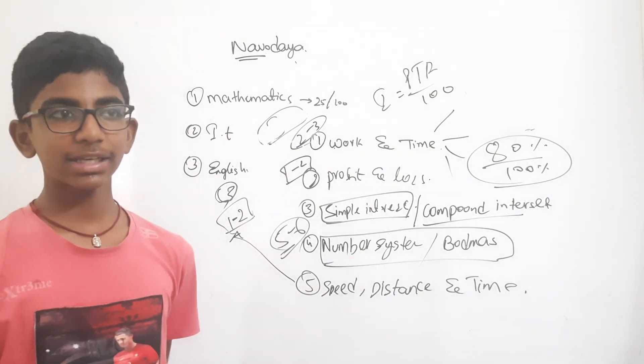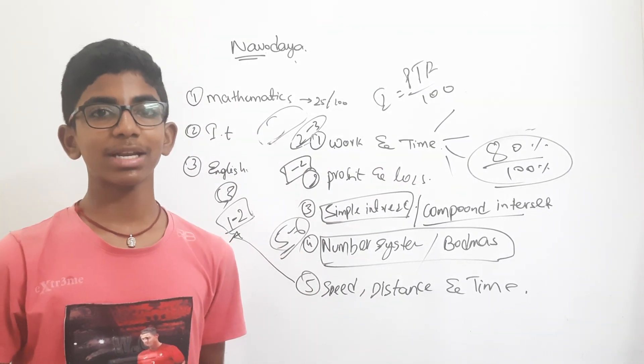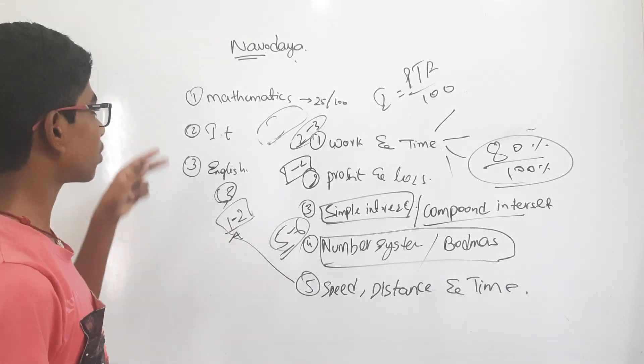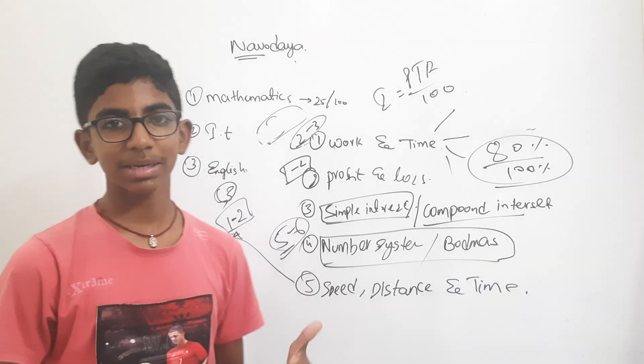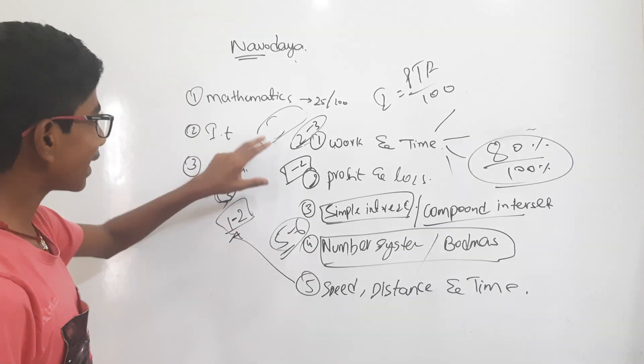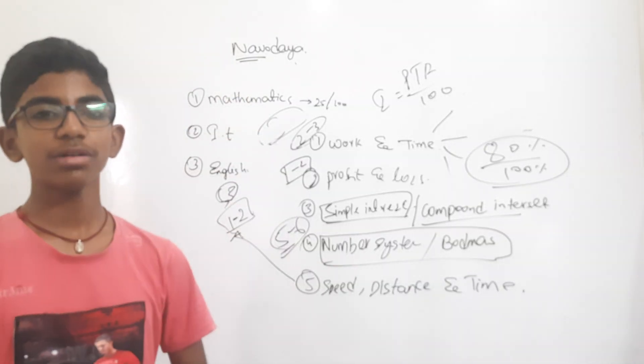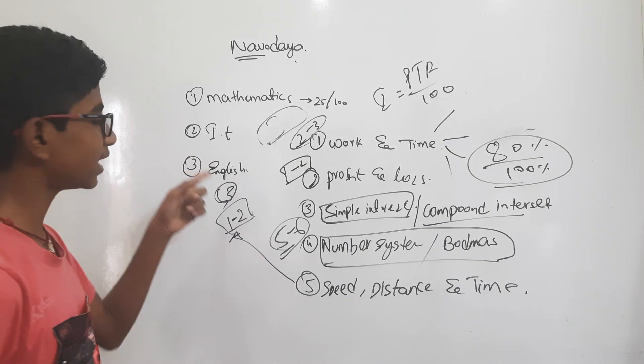If you get above 90 percent in Mathematics, we will confirm you get Navodhya, because in the other two lessons we will get minimum marks. So mainly concentrate on Mathematics. Thanks for watching this video. In the next video, we will discuss about Intelligence Test and English.